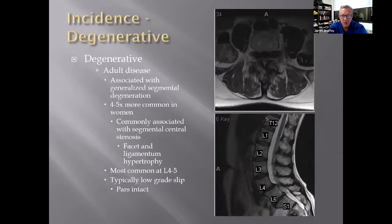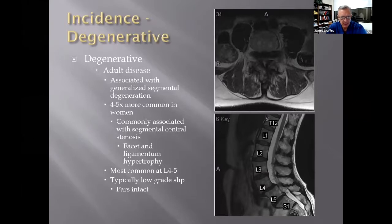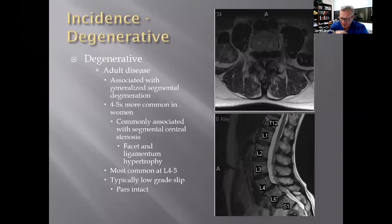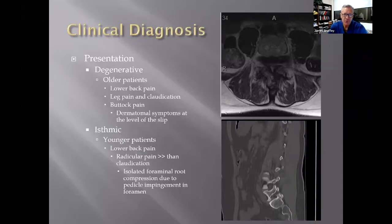Degenerative spondylolisthesis is slightly different — it's a disease of adults, not seen in children, and is associated with generalized segmental degeneration. It is four to five times more common in women than men, probably related to ligamentous issues or degenerative changes specific to women's spines. It's often associated with central spinal stenosis, unlike isthmic spondylolisthesis. It's most commonly at L4-5, not L5-S1, and because the PARS interarticularis are intact, it typically presents as low-grade slips — generally no more than grade 2.